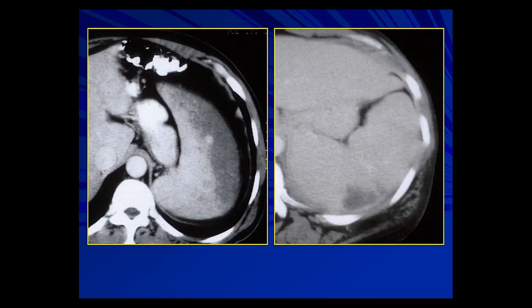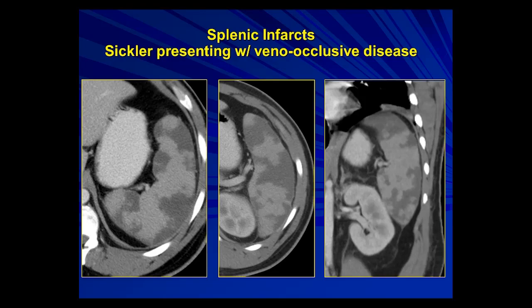Some other patterns of infarct in the spleen include a more geographic pattern and peripheral geographic pattern, and another with mixed irregular and somewhat wedge-shaped areas in a patient with erythroleukemia. Patients with infiltrative disorders in the spleen sometimes develop little infarcts that are a complication of the underlying disease. Another pattern seen in sicklers with veno-occlusive disease is a geographic pattern where the areas of hypoattenuation are larger and more irregular — these are infarcts on venous phase scans.